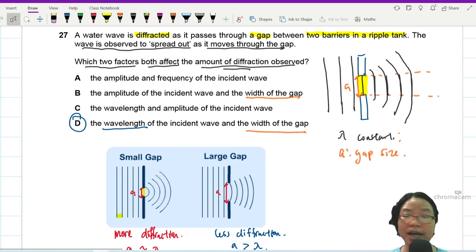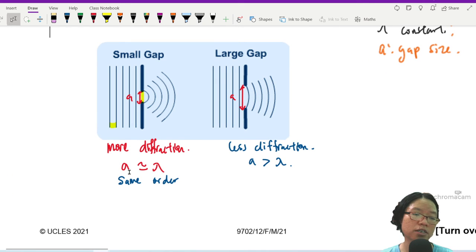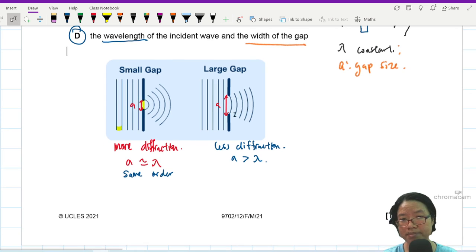For good diffraction pattern or good spreading you want good spreading like this, a must be close to lambda same order. Maybe this is 400 nanometer, maybe lambda is 600 nanometer or 800 nanometer those are okay. And the larger the gap the less the spreading, it doesn't spread that much.